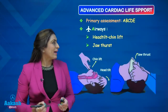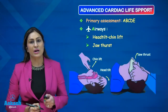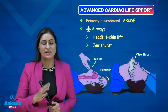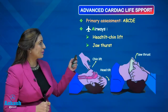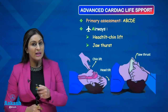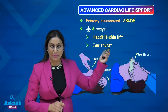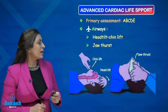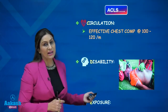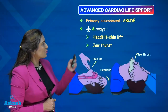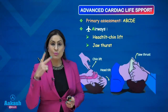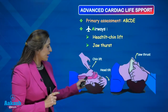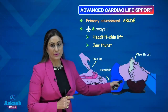Let us go back and read a little theory of Advanced Cardiovascular Life Support. It has two assessments: primary assessment and secondary assessment. The primary assessment has A, B, C, D, E — A stands for airway, B for breathing, C for circulation, D for disability, and E for exposure. When we come to airway, there are two manoeuvres we need to know: the head tilt and chin lift manoeuvre, and the jaw thrust manoeuvre.